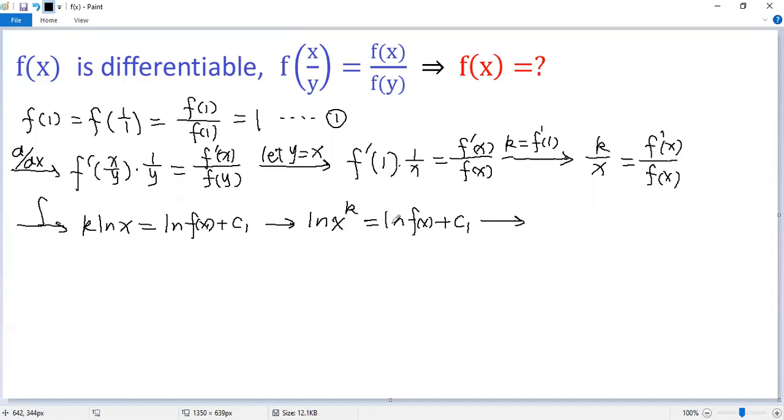Now, we take both sides as the exponents of e. So we get e to the power of ln x to the power of k equals e to the power of ln f(x) times e to the power of c1.